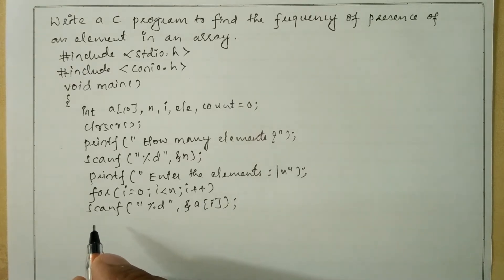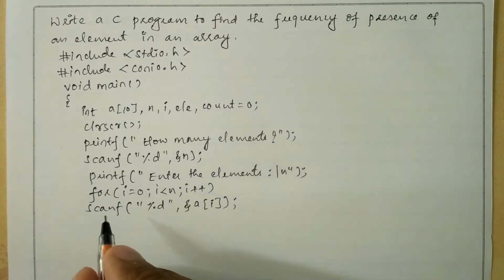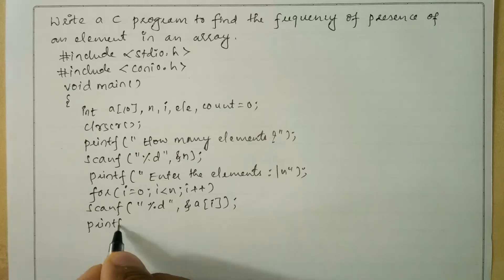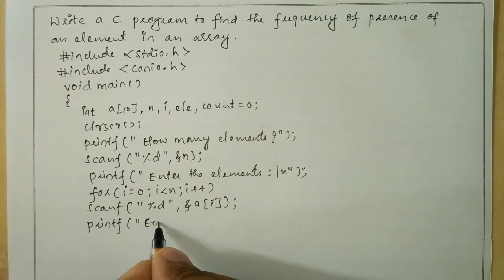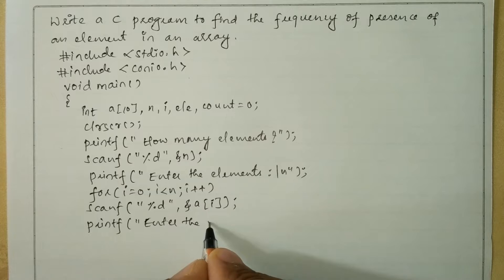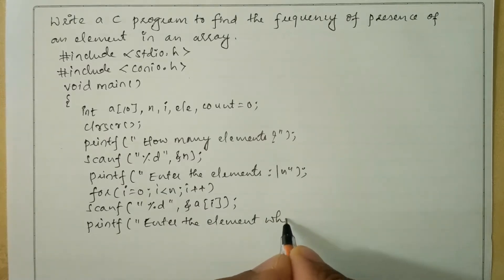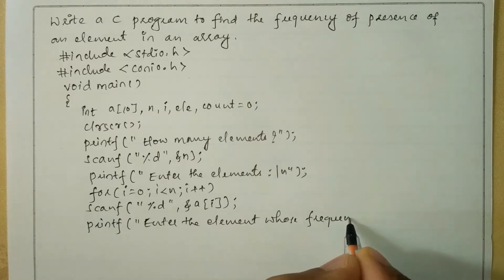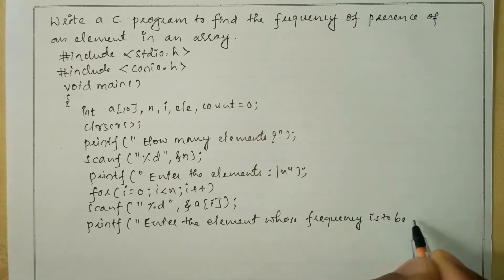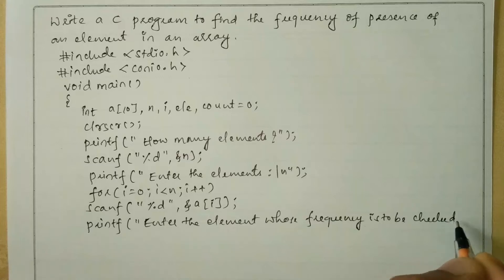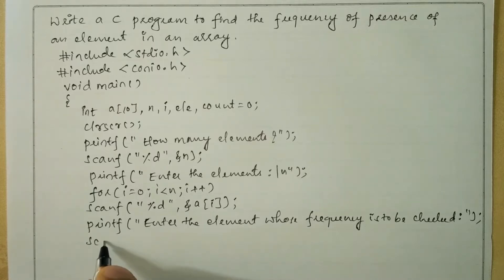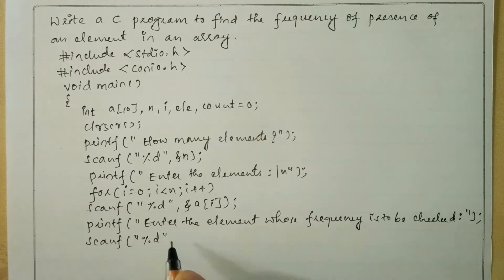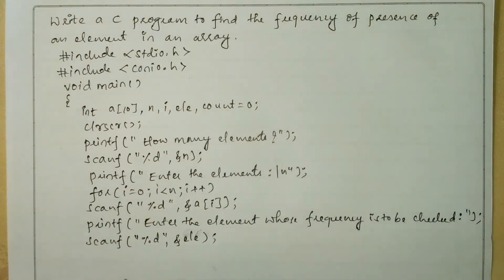Now we have to ask the user to enter the element whose frequency is to be checked. So for that I write a printf statement: "Enter the element whose frequency is to be checked", end the double quotation mark and put semicolon. Then we receive the value using scanf with %d and &ele.